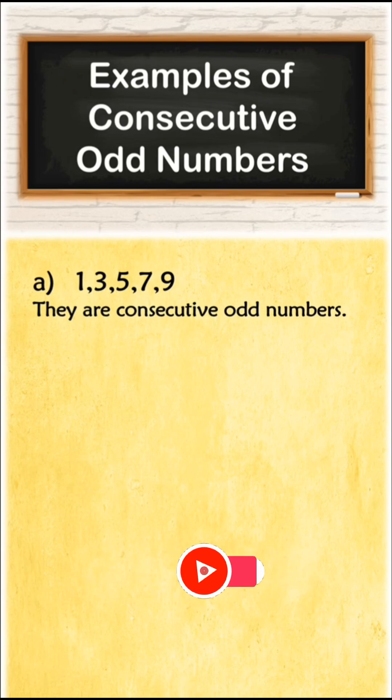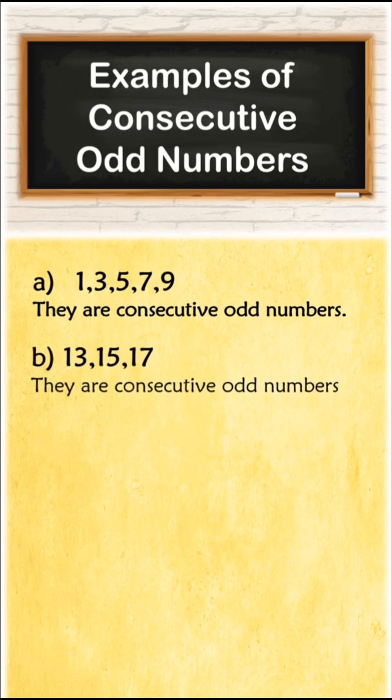Next example, 13, 15, 17. Yes, they are consecutive odd numbers. In this case, 13, 15, 17 are odd numbers because they are not divisible by 2. And moreover, they are in the same sequence.